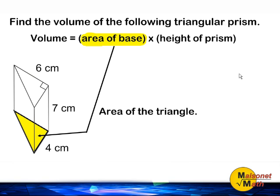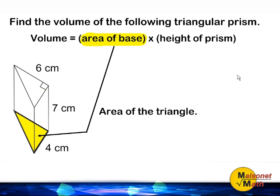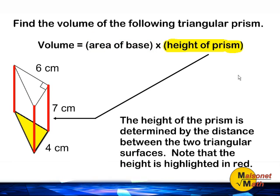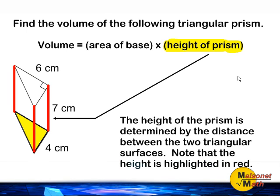The base of our triangular prism is highlighted in yellow. We have to figure out what the area of that triangle is. After we find the area of the triangle highlighted in yellow, we must multiply that answer by the height of our prism. The height of the prism is determined by the distance between the two triangular surfaces, highlighted by the red line shown on the figure.